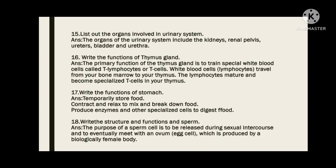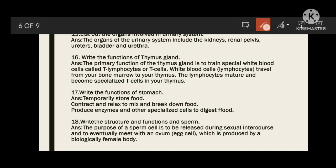Write the function of the thymus gland. The thymus gland mainly contains T-lymphocytes (white blood cells). Lymphocytes travel from the bone marrow to the thymus, where they mature and become specialized T-cells. These T-cells help increase immune cells and can fight against foreign particles and diseases.